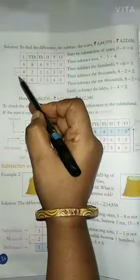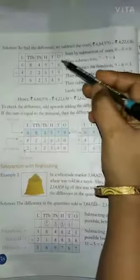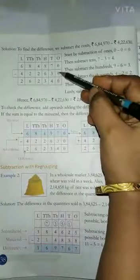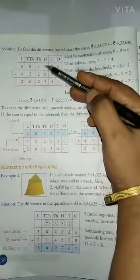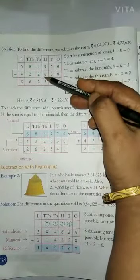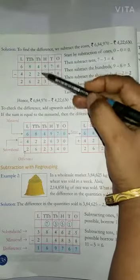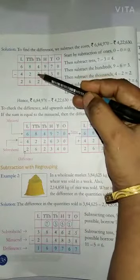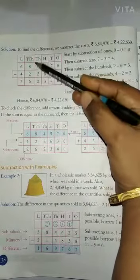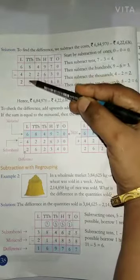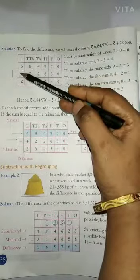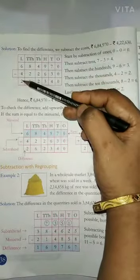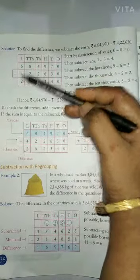अब हम उनसे subtraction करेंगे। 0 minus 0 is 0. 7 minus 3 gives us 4. 9 minus 6 gives us 3. 4 minus 2 gives us 2. 8 minus 2 gives us 6. And 6 minus 4 gives us 2.